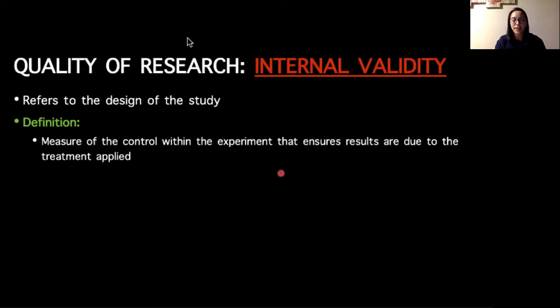Alright, our final video in our Module 1 lecture series is going to be covering the quality of research, and we're going to start by talking about something called internal validity. Internal validity is typically going to refer to the design of the study, and it's the measure of control within the experiment, so within being internal, that ensures results are due to the treatment applied.